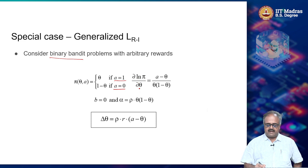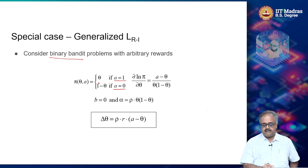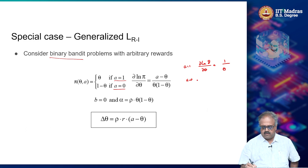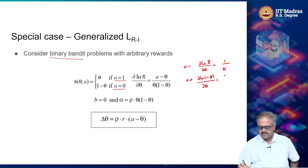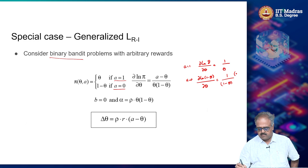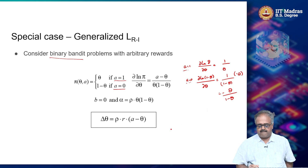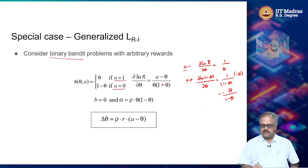Looking at the derivative: d(ln π)/dθ — for a equal to 1, this is d(ln θ)/dθ, which equals 1/θ. For a equal to 0, it is d(ln(1−θ))/dθ, which equals (1/(1−θ)) × (−1), giving −1/(1−θ). One way of combining these two expressions is to write a single unified form.